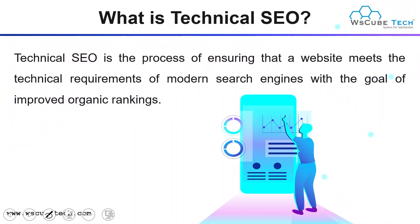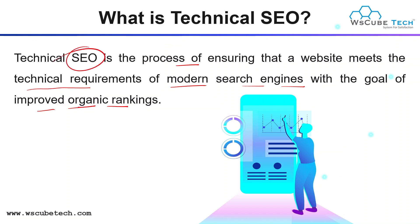Let's start with the basic definition of technical SEO. Technical SEO is the process of ensuring that a website meets the technical requirements of modern search engines with the goal of improving organic ranking. The goal of SEO is to improve your organic ranking on the search engine result page, and we are covering the technical aspect of SEO here.